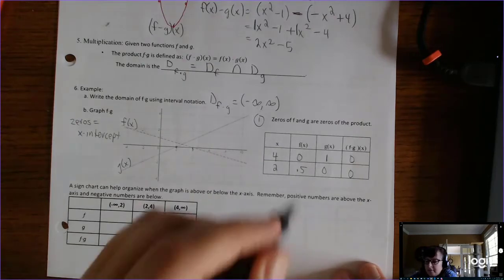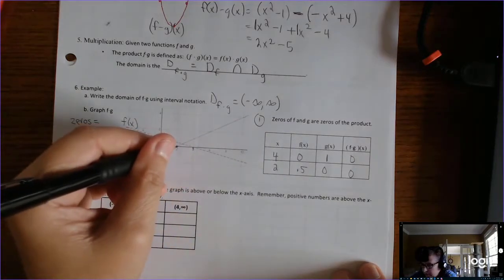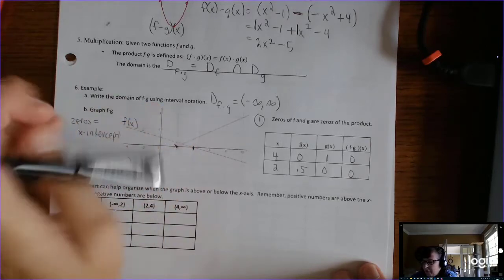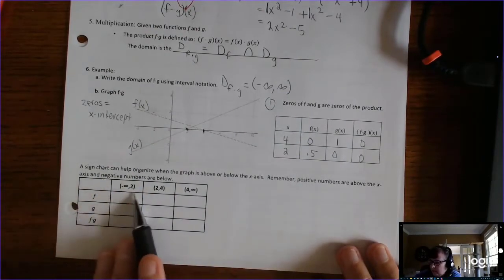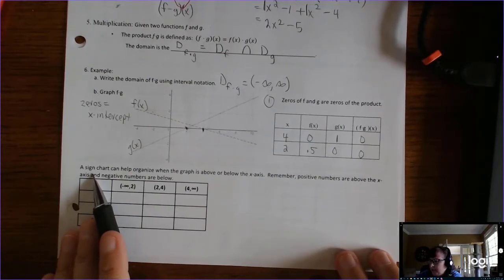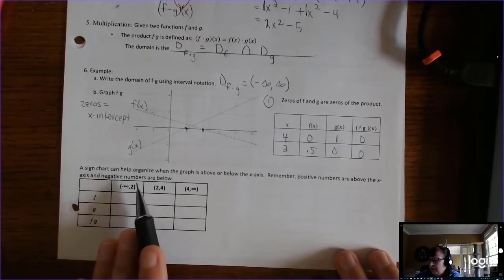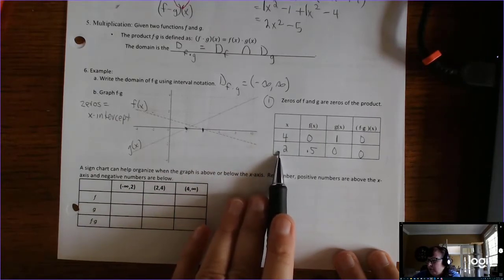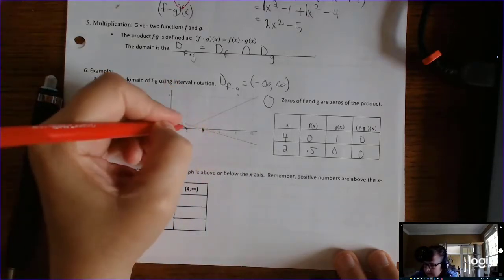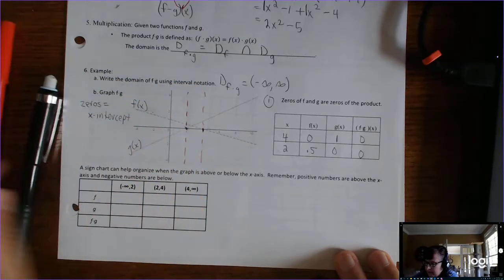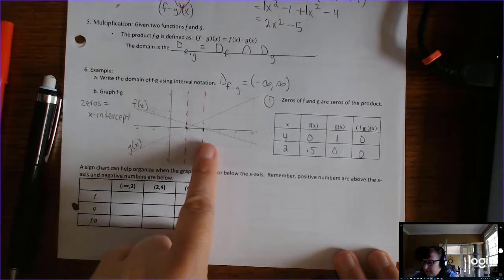We learn that the zeros of f and g are the zeros of the product. So we know that the result is going to go through x equals 4 and x equals 2. The easiest way to graph these is to create intervals. A sign chart can help organize when the graph is above or below the x-axis — positive numbers are above, negative numbers are below. There's a zero at 2 and 4, so the x-axis is broken into three intervals: negative infinity to 2, 2 to 4, and 4 to infinity.